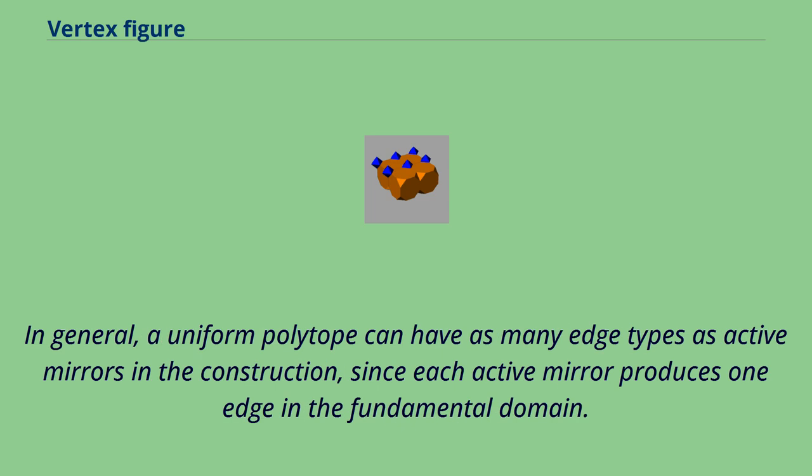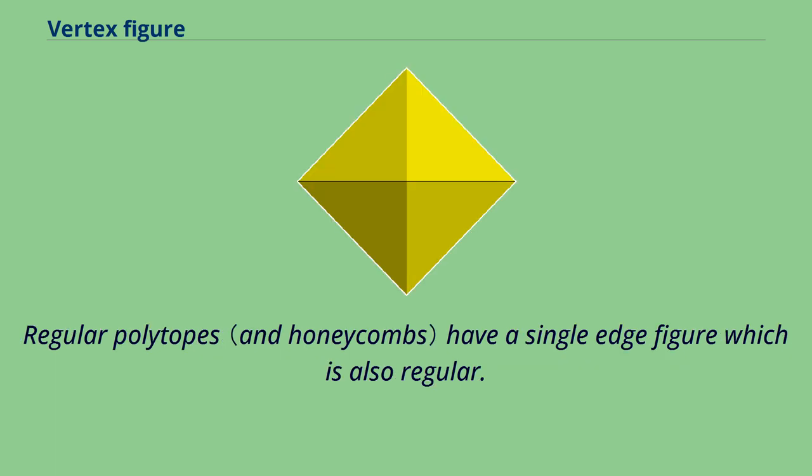In general, a uniform polytope can have as many edge types as active mirrors in the construction, since each active mirror produces one edge in the fundamental domain. Regular polytopes have a single edge figure which is also regular.